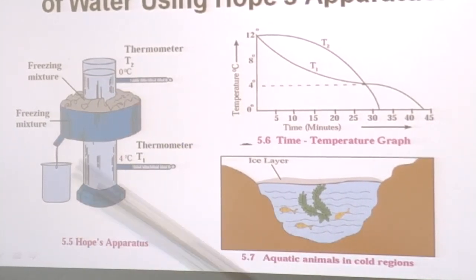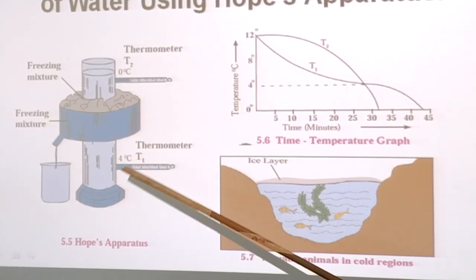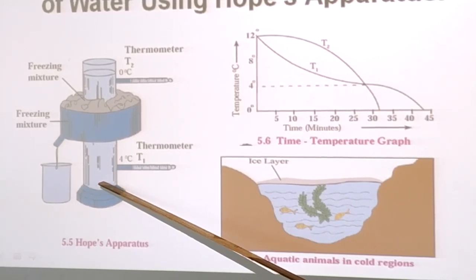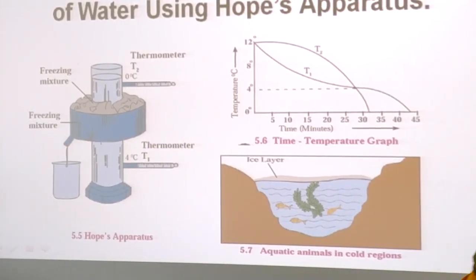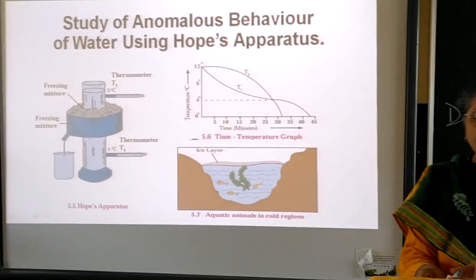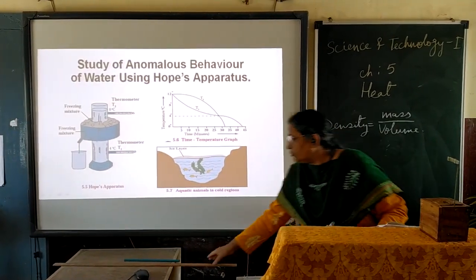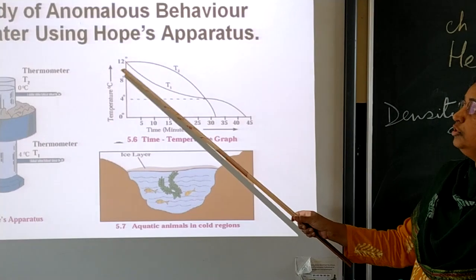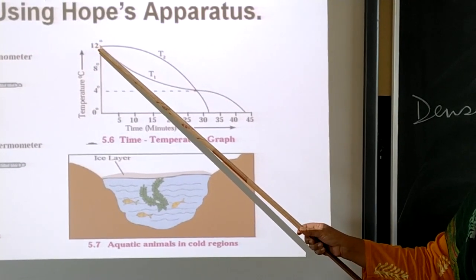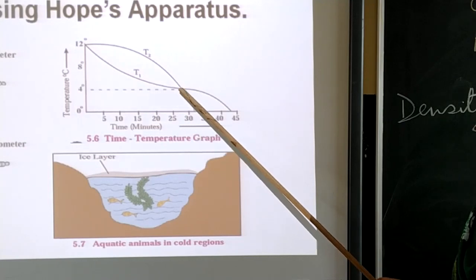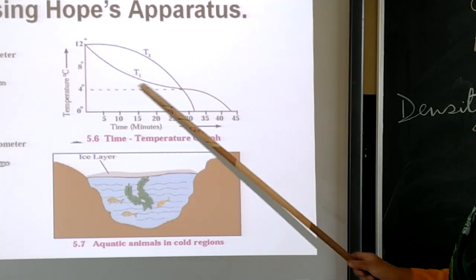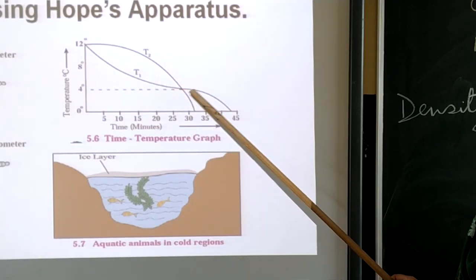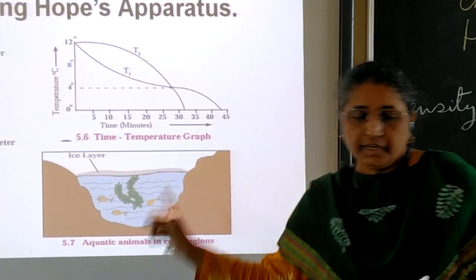At that time, thermometer T1 shows a steady 4 degrees Celsius for a while, and after some time it also shows a fall in temperature reaching 0 degrees Celsius. You can observe this from the time-temperature graph: in the beginning T1 and T2 are at the same temperature. Then T1 starts falling until 4 degrees Celsius. After that, T2 starts falling, and eventually both attain 0 degrees Celsius.